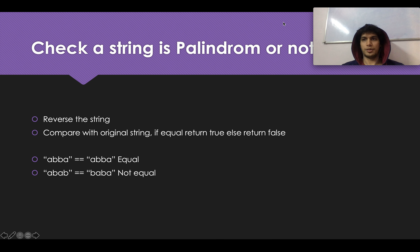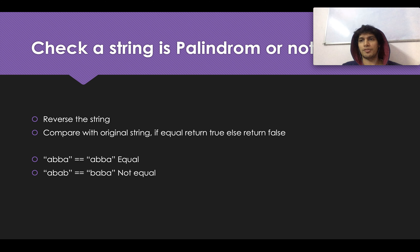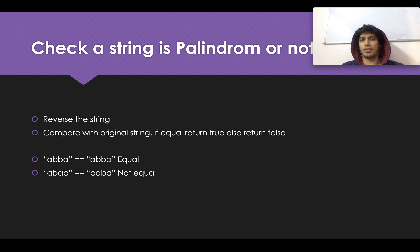This is LeetCode 131, day 14 of the challenge. Before the main logic, how do you check whether a string is palindromic? One approach is the two-pointer method: start from the beginning and end of the string, compare characters, increment start and decrement end. If there's a mismatch return false; if you traverse the complete string return true.